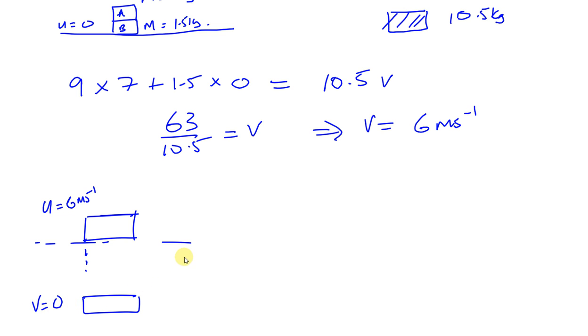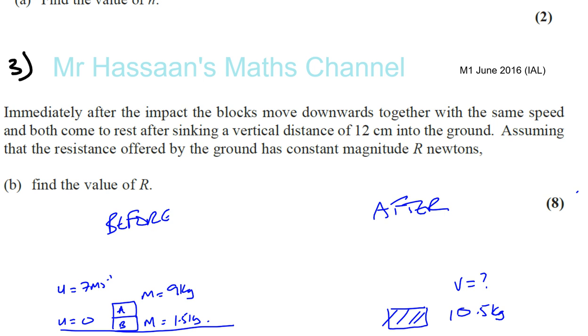Now what forces are acting on the block? Well you've got the weight which is 10.5 G and you've got the resistance that the ground is giving. As it says here in the question, the blocks move downwards together with the same speed and both come to rest after sinking a vertical distance of 12 centimeters into the ground. Assuming that the resistance offered by the ground has a constant magnitude R newtons, find the value of that resistance R.